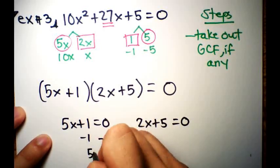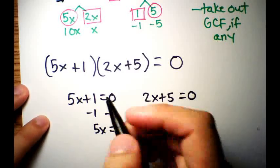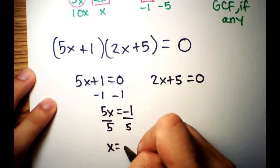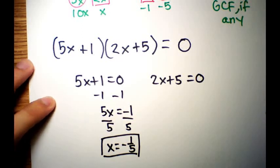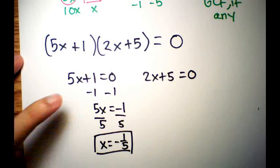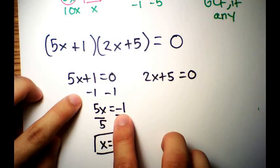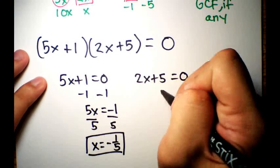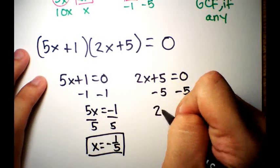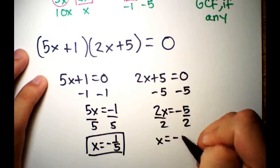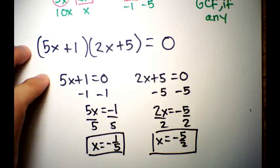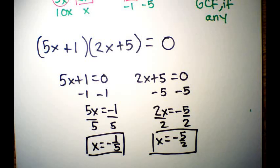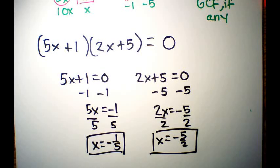Set each factor to zero: 5x + 1 = 0 and 2x + 5 = 0. Solving the first: subtract 1, then divide by 5, giving x = -1/5. Solving the second: subtract 5, then divide by 2, giving x = -5/2. Leave answers as improper fractions — especially important for higher math like trig and calculus. Check if reducible — they're not.